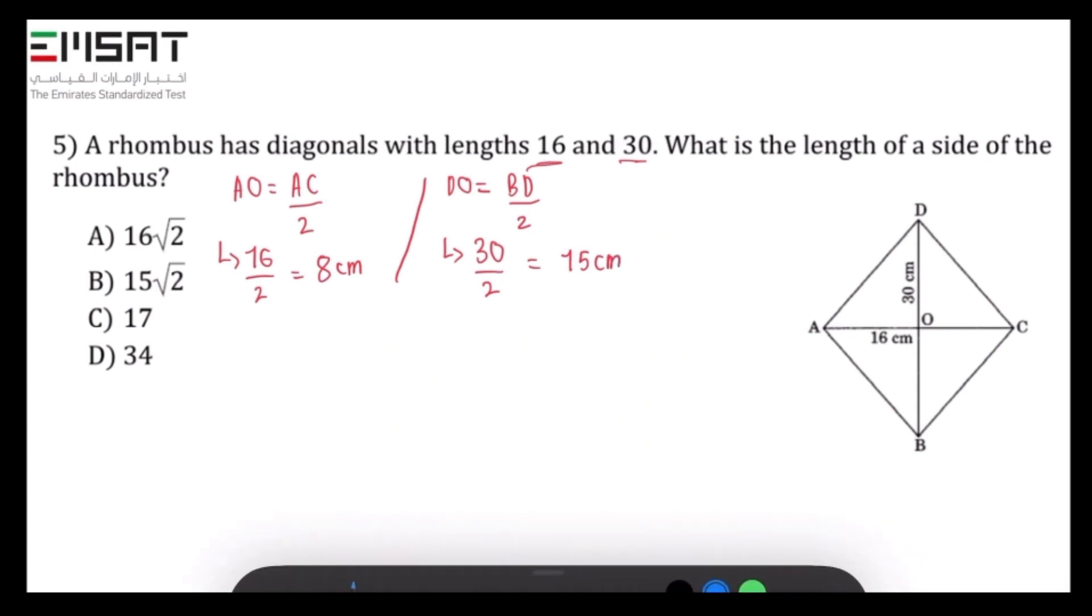So then consider the triangle AOD and apply the Pythagoras theorem. The Pythagoras theorem states that AD equals AO squared plus DO squared. So now let's plug our values into this formula. AD equals 8 squared plus 15 squared.